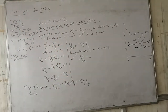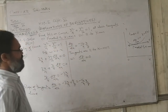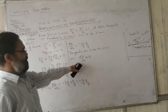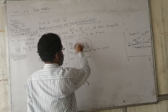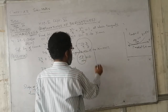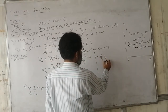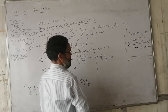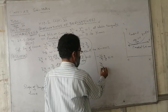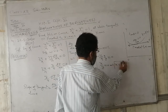Setting dy/dx = 0: −(16/9)(x/y) = 0. Since 16 cannot be zero, x/y = 0, which means x = 0. Putting x = 0 in the equation of the curve: 0/9 + y²/16 = 1, so y² = 16, giving y = ±4. The two points are (0, 4) and (0, −4).